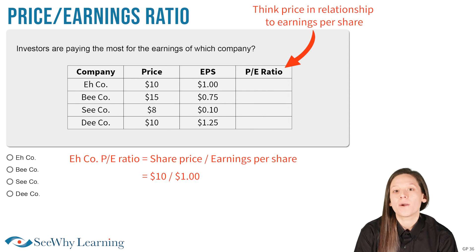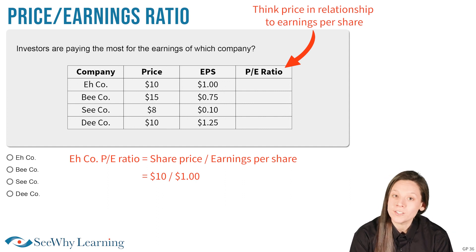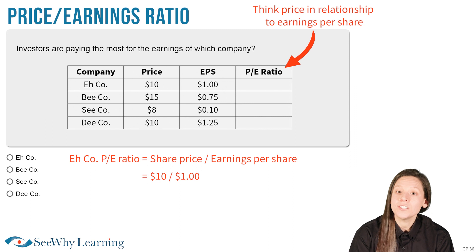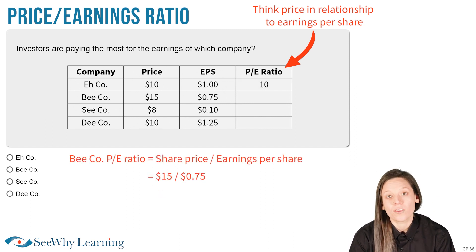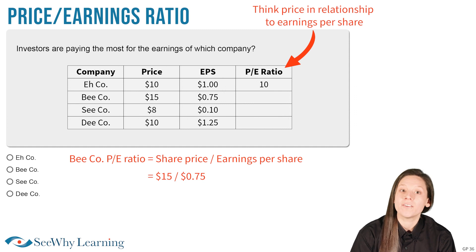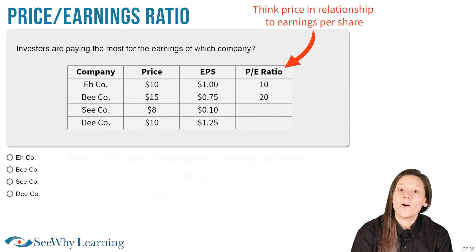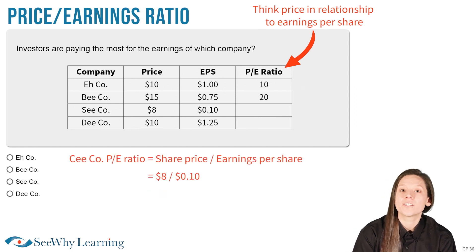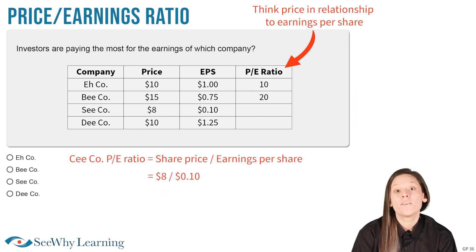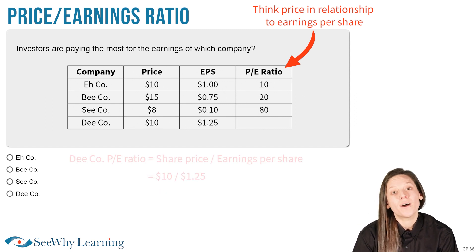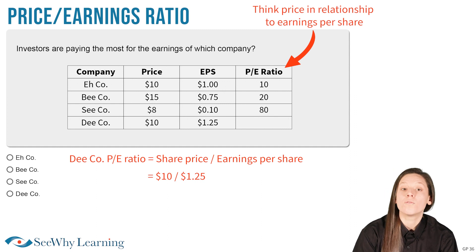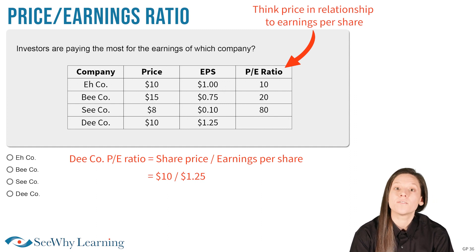A Co has a price of $10 and earnings per share of $1, for a price-earnings ratio of 10. B Co has a price of $15 and earnings per share of $0.75, for a price-earnings ratio of 20. C Co has a price of $8 and earnings per share of $0.10, for a price-earnings ratio of 80. D Co has a price of $10 and earnings per share of $1.25, for a price-earnings ratio of 8.